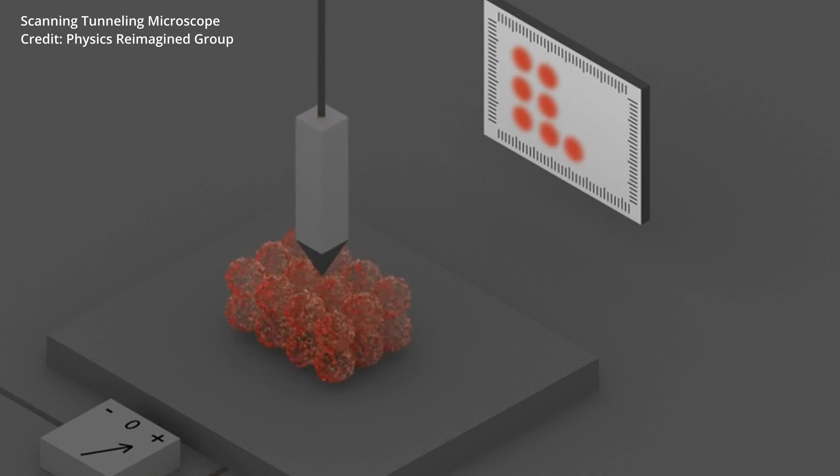Finally, after the tip has finished scanning your region of interest, a computer maps out the changes in current to produce a topographical image of the sample.